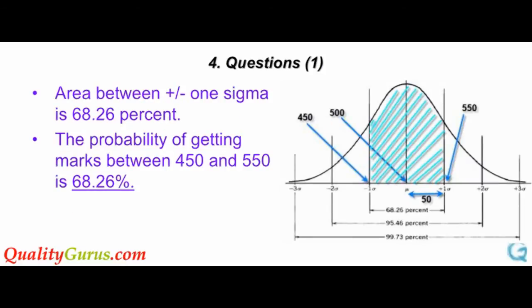In this case, the mean is 500 and standard deviation of 50. 450 marks are one standard deviation less than the mean, and 550 marks are one standard deviation more than the mean. In fact, in this example, we need to find the area between plus and minus one standard deviation, which we know is 68.26%. So we can say that the probability of getting marks between 450 and 550 is 68.26%.